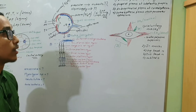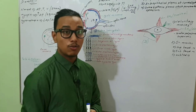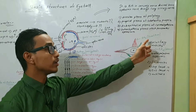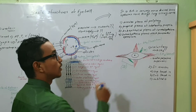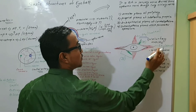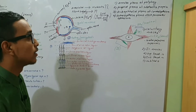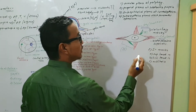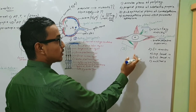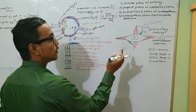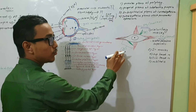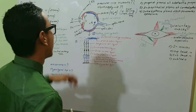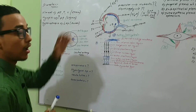Regarding nerve supply, the mnemonic is SO4 LR6 3: the superior oblique is supplied by cranial nerve 4 (the trochlear nerve); the lateral rectus is supplied by cranial nerve 6 (the abducens nerve); and all other muscles — superior rectus, inferior rectus, medial rectus, inferior oblique — are supplied by cranial nerve 3 (the oculomotor nerve).